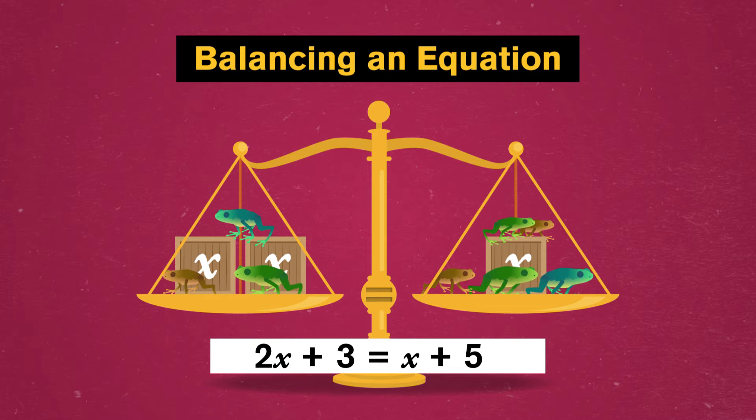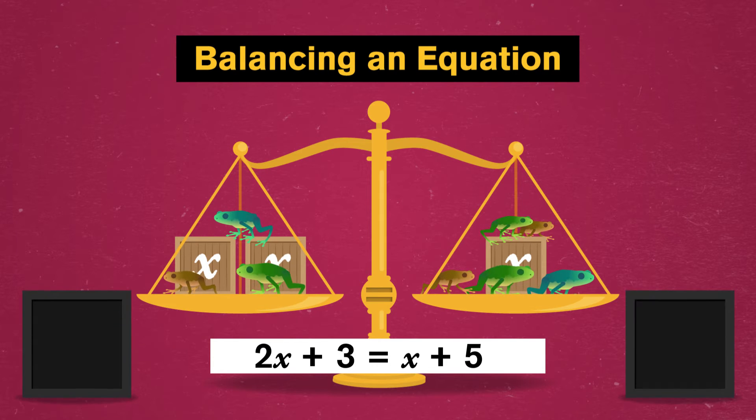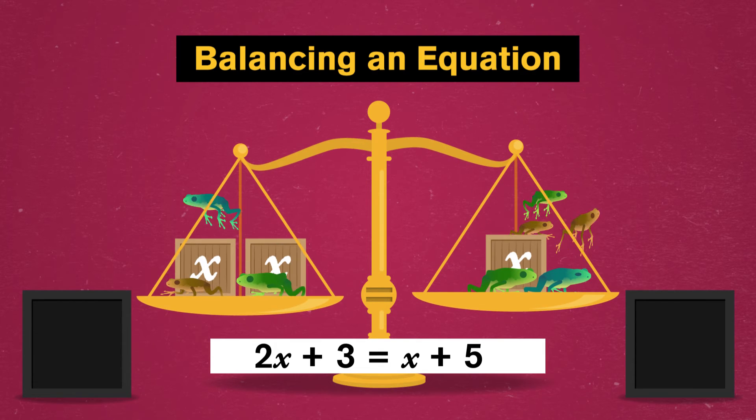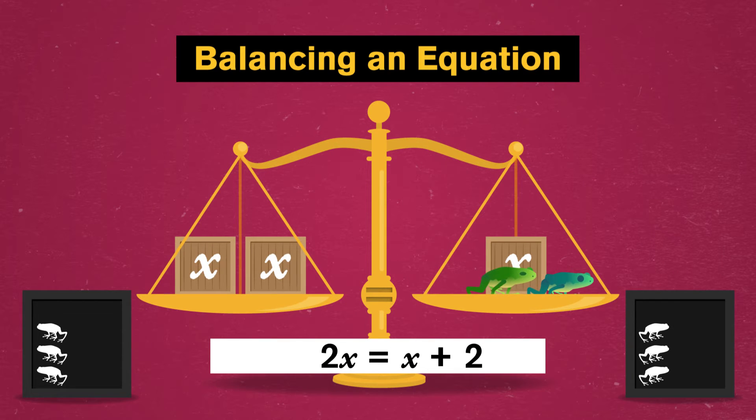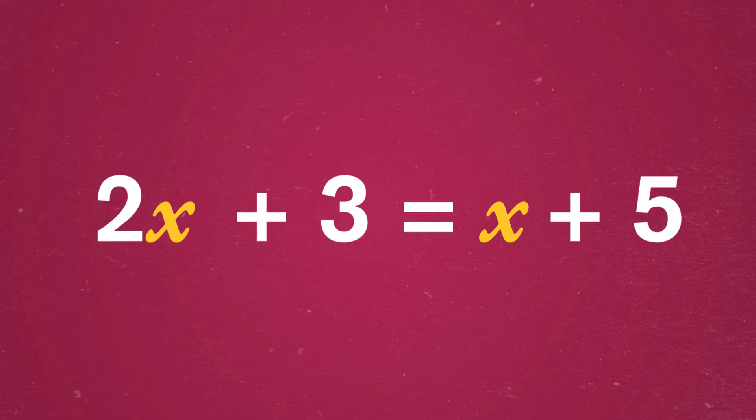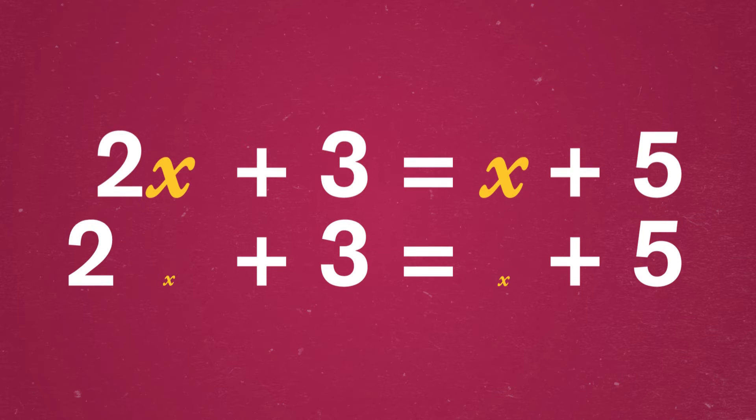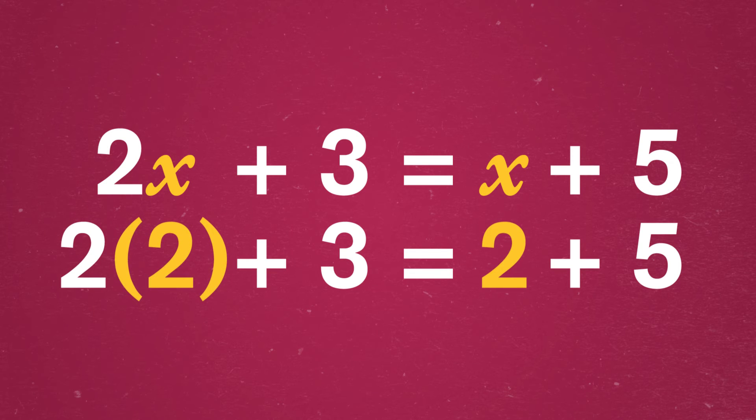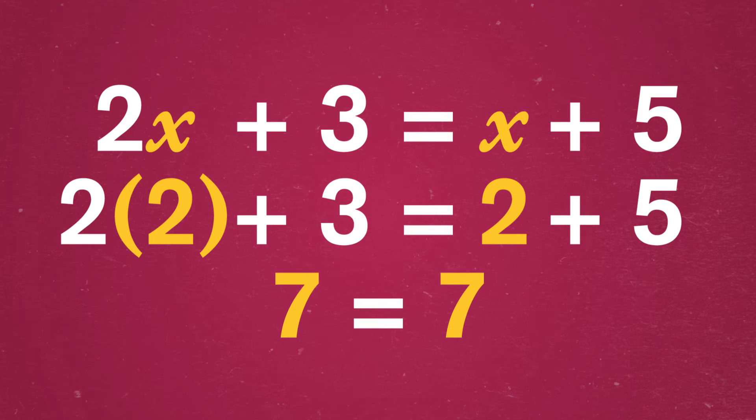Let's see if we can make this simpler. Could we take anything off each side and still have the scales balanced? Well, each side has at least three extra frogs. This equivalent equation, an equation that will only be true if our original equation is also true, is already easier to look at. And now, why not take up a whole box? We might not know how many frogs are in each box, but we do know we're removing the same number of frogs on each side. Ah, now it's clear that there are two frogs in the box. So we plug in 2 for X in the equation, 2X plus 3 equals X plus 5, we'll get something that's true. And we do. 7 on the left equals 7 on the right.